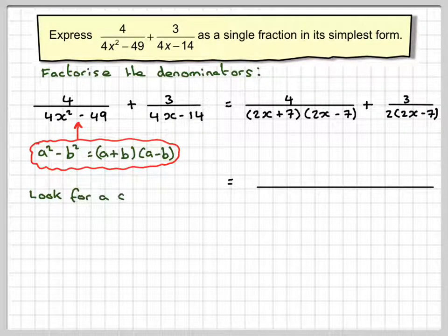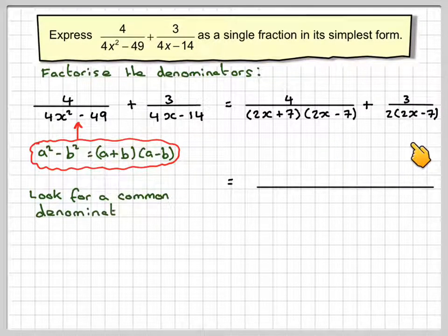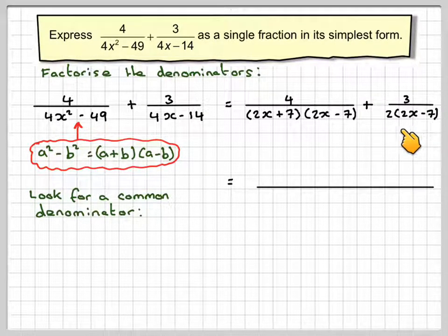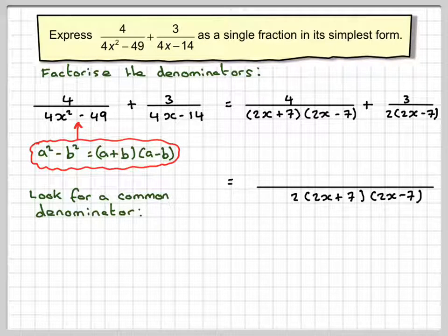We're now going to look for the common denominator. So we've got x minus 7, 2x minus 7 is common. So this one we're going to have to multiply by 2x plus 7, and this one we're going to have to multiply by 2. So the common denominator will be 2 times 2x plus 7, 2x minus 7.